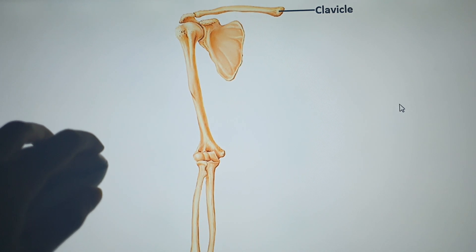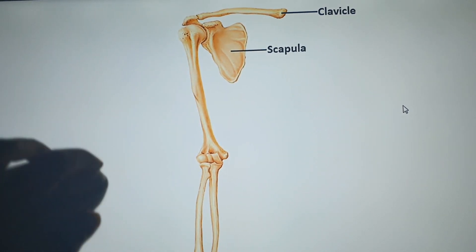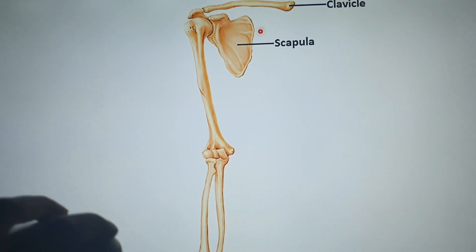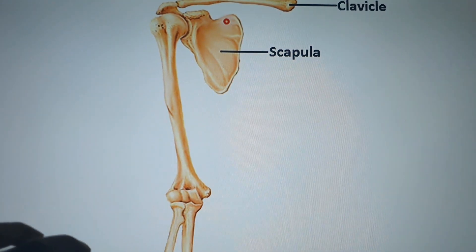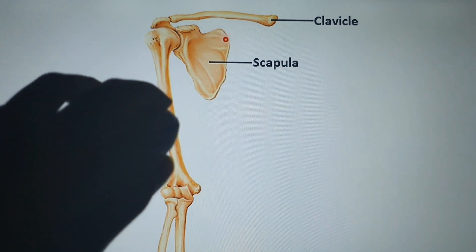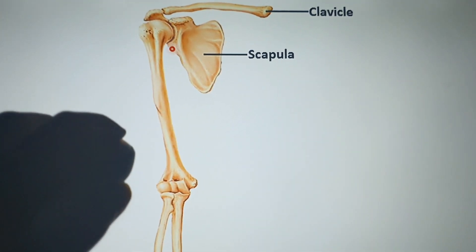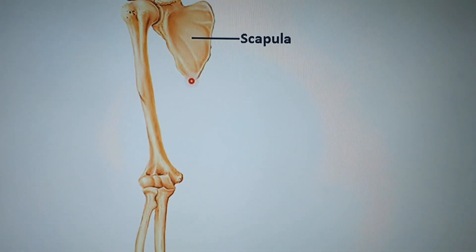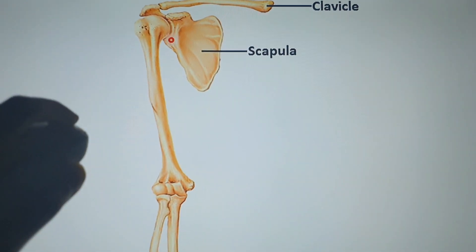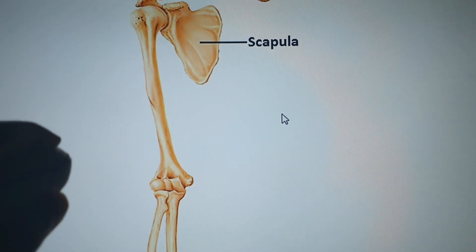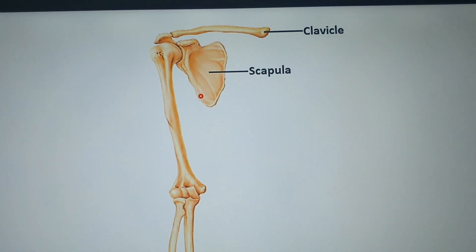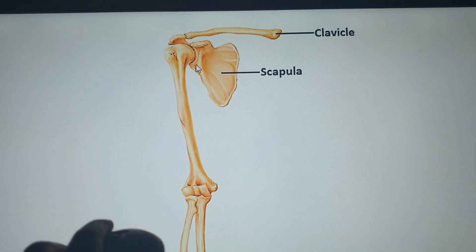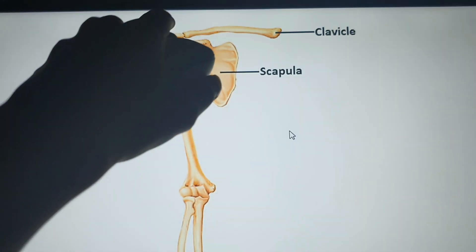This is called the scapula. The scapula is a triangular shape and is a flat bone. It has three borders: the superior (upper) border, the medial border, and the lateral border. It also has three angles: the superior angle, the inferior angle, and the lateral angle.